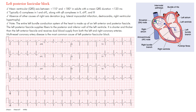Remember we have our sinus node in the right atrium, then the AV node, the His bundle, and the right ventricle is supplied by the right bundle branch. Our focus is the left ventricle — the left bundle branch comes off and then subdivides into an anterior and posterior fascicle. When this posterior fascicle gets blocked, the impulse comes down from above, reaches that block, and can't get through.